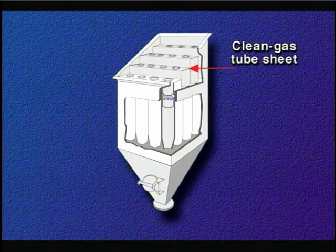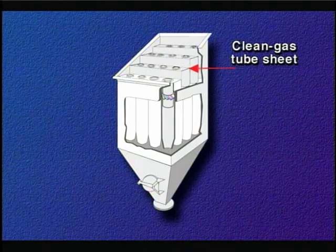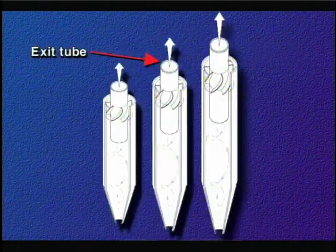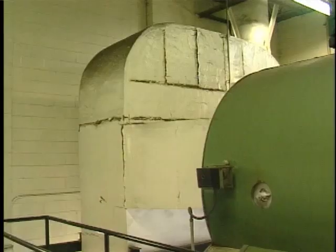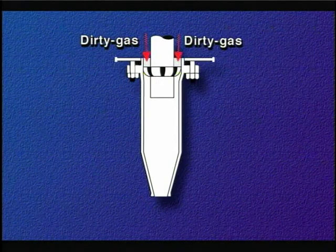The upper, or clean gas tube sheet, separates the inlet gas stream from the treated outlet gas stream. This tube sheet stair steps downward from the inlet or slopes at about a 45 degree angle in order to help evenly distribute the airflow into each row of cyclones. The exit tubes from each of the cyclones extend through the area of the entering gas stream and discharge through the upper tube sheet. The gas stream entering the multi-cyclone collector turns 90 degrees downward and enters the individual cyclones through the annular space between the body and the exit tube.